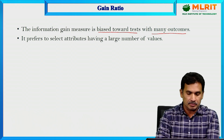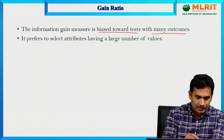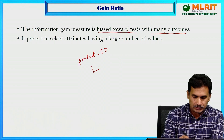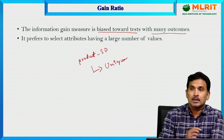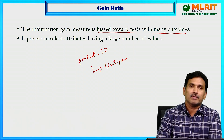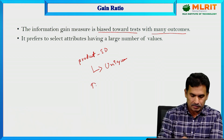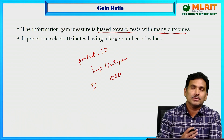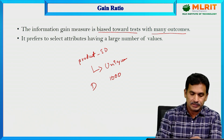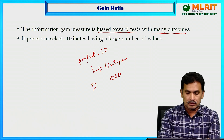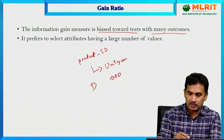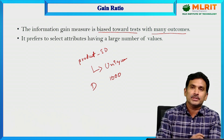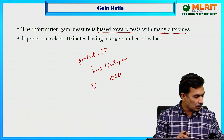Information gain prefers to select attributes having a large number of values. For example, if you take an attribute like product ID, it has unique values — duplicate values are not allowed. Suppose the database D has one thousand records, then the product ID attribute is going to have 1000 unique or different values. In such a case, if you use information gain, it will be biased towards that test because it has many outcomes. That is why we have to use an alternative approach when an attribute has more outcomes.